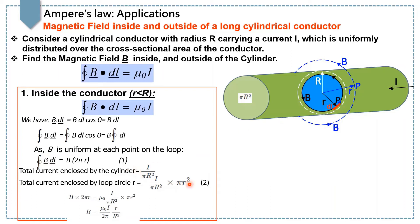Equating equations 1 and 2, we get B into 2πr is equal to μ₀ times i over πR² into πr², which simplifies to the magnetic field B equals μ₀i over 2π times r over R². Here you can see the magnetic field is directly proportional to the distance r.